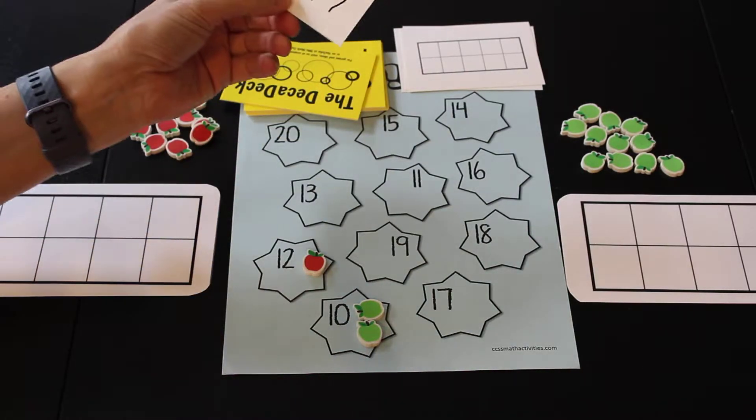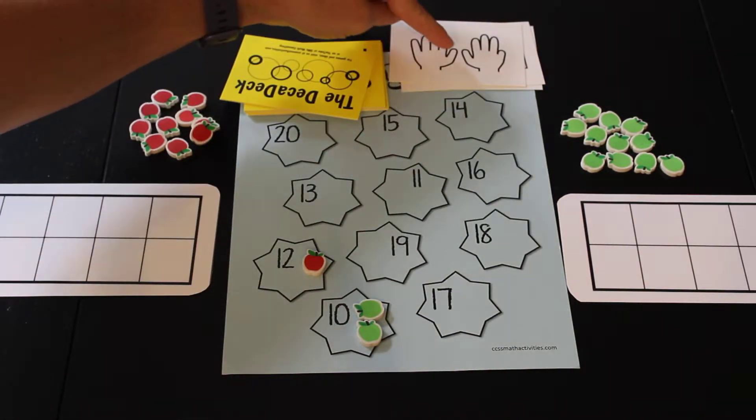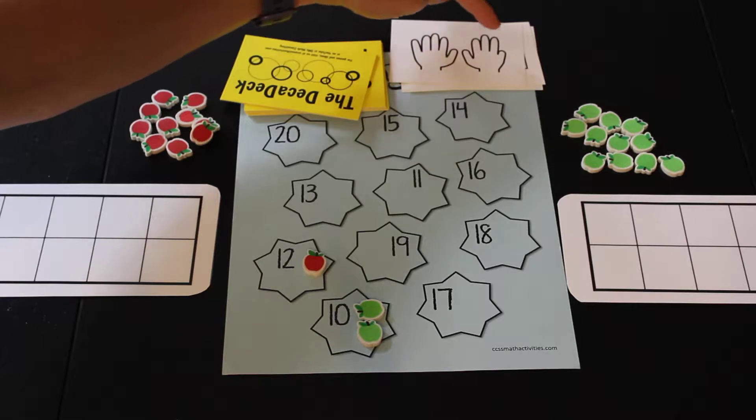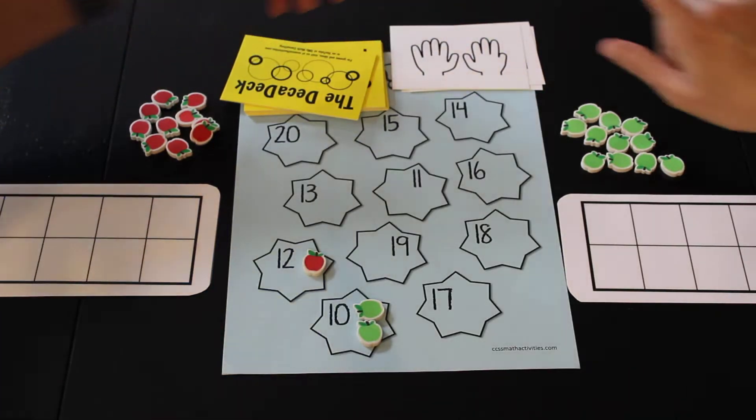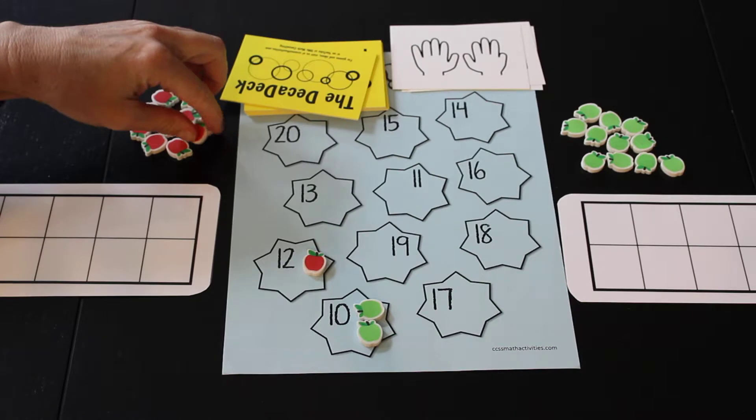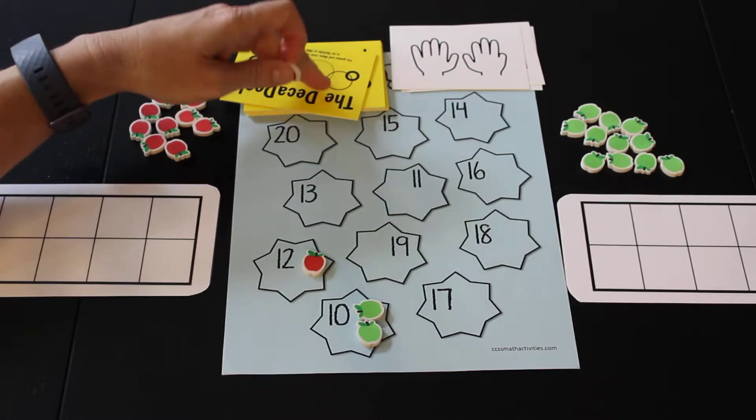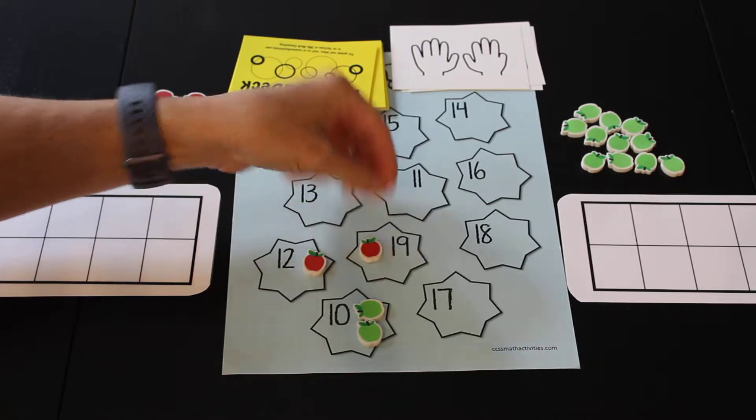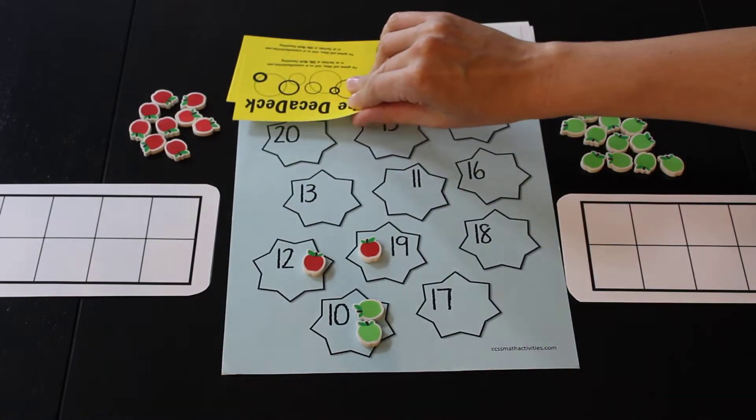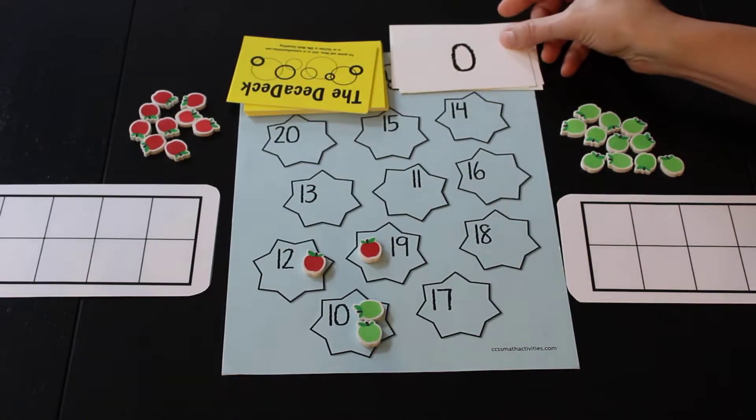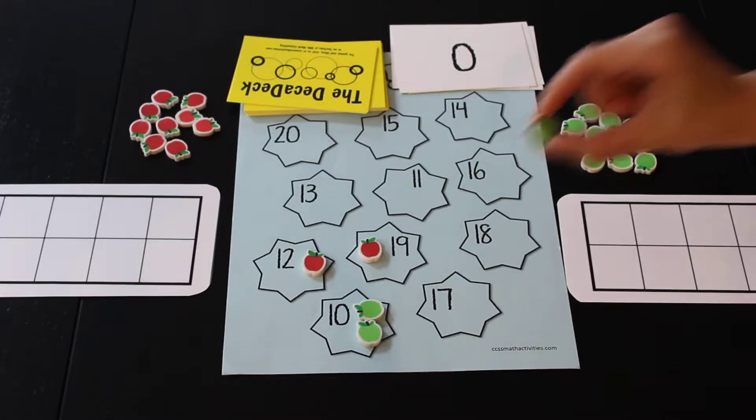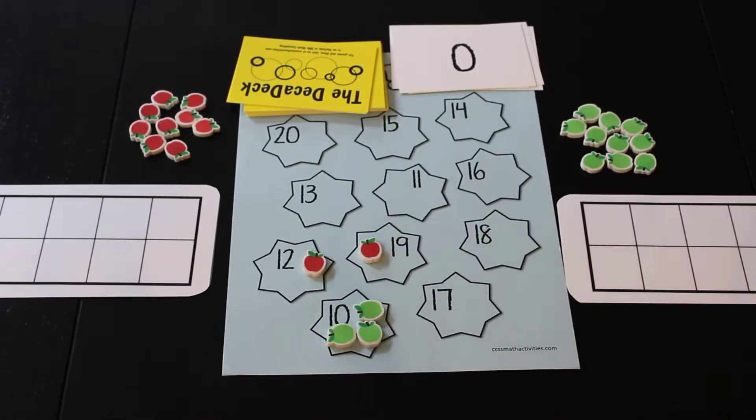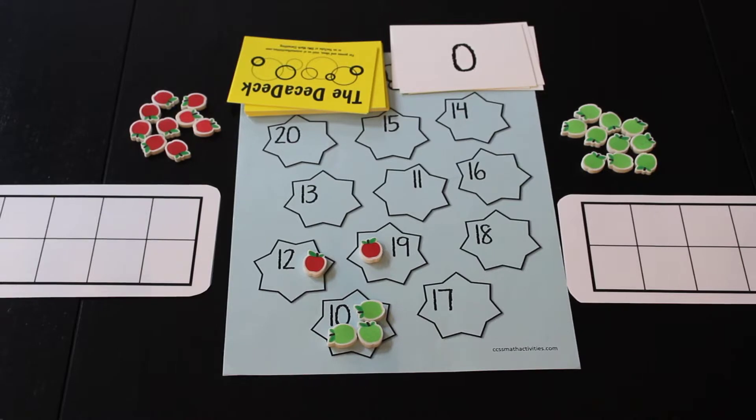Let's see, I got 5, 6, 7, 8, 9. Nine plus 10... pinkies down, yeah, okay. Nine plus 10 is 19, so I'm going to put my red apple right here on the 19. I got another zero! What are the chances I got another zero? Zero plus 10 is 10, okay.